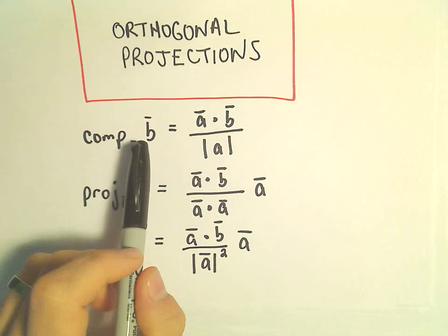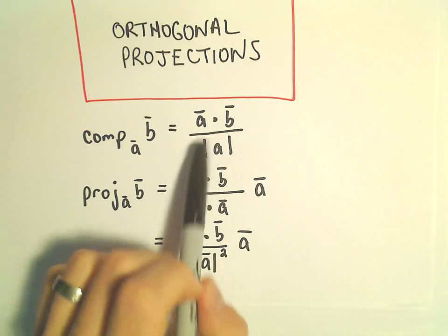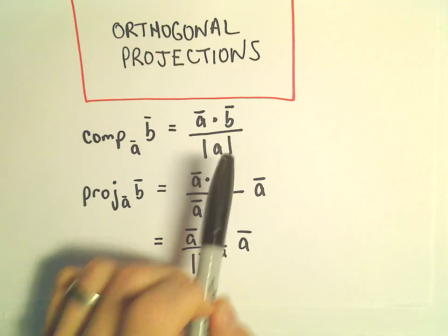So, to figure out the component of B onto A, we take the dot product A dot B and we divide that by the magnitude of vector A.